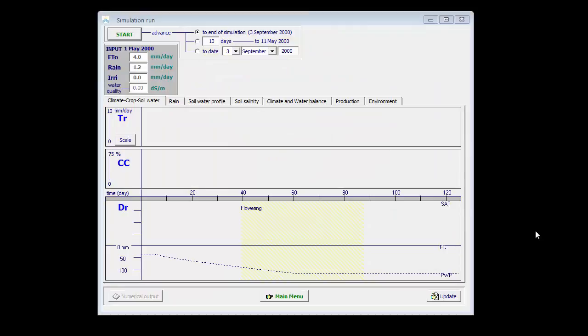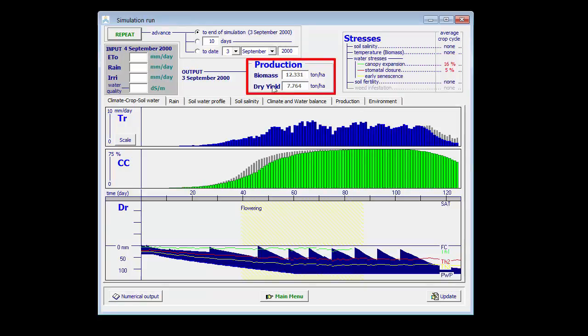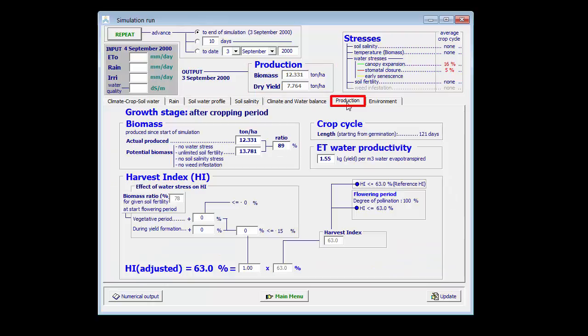When I run a simulation for a different irrigation strategy, I get a lower yield, which is now only 7.8 tons instead of 8.3 tons. But if I look at the performance indicator, I see that the ET water productivity has increased from 1.49 to 1.55.